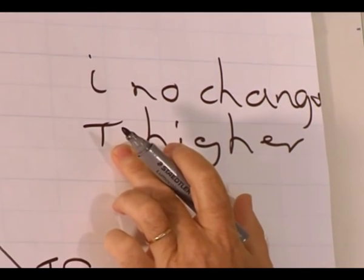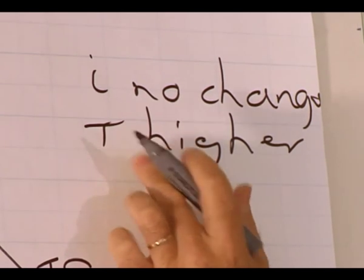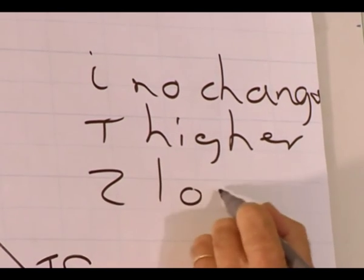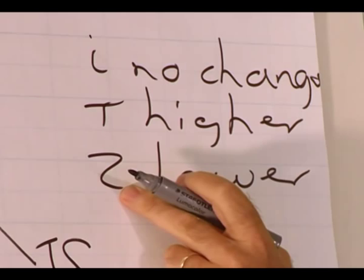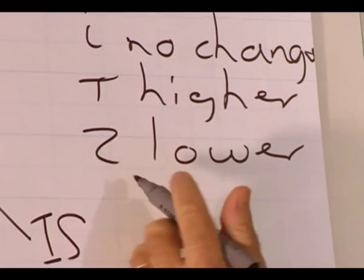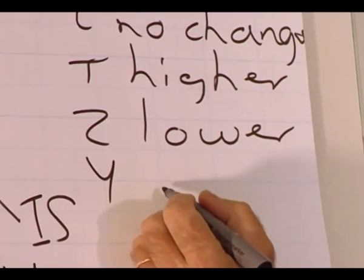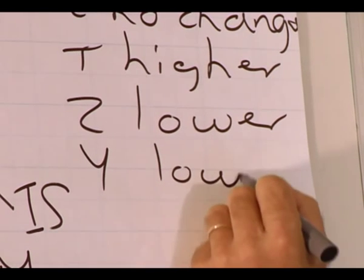The increase in taxes led to a lower demand for goods and services, so Z is lower. And the lower demand for goods and services led to a lower level of production, so Y is also lower.